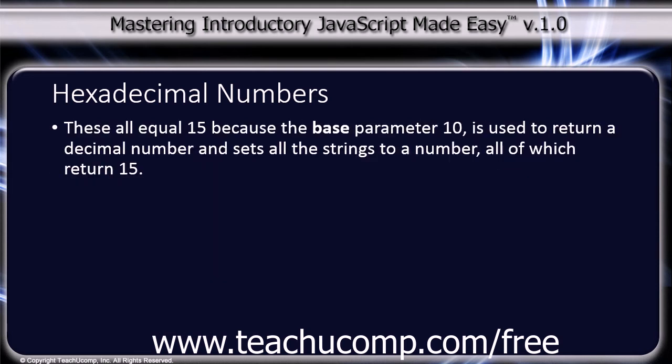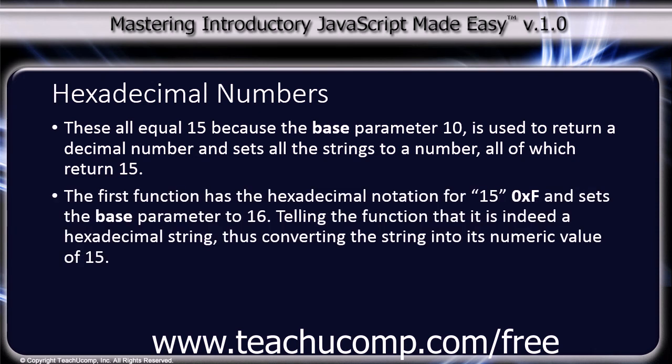These all equal 15 because the base parameter 10 is used to return a decimal number and sets all the strings to a number, all of which return 15. The first function has the hexadecimal notation for 15, 0xf, and sets the base parameter to 16, telling the function that it is indeed a hexadecimal string, thus converting the string to its numeric value of 15.